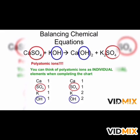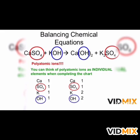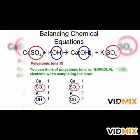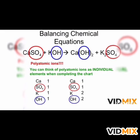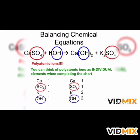In this equation, SO4 and OH are the two polyatomic ions which are present on both sides of the equation. You can think of polyatomic ions as individual elements when completing the chart.